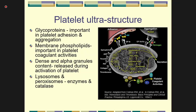In the coagulation cascade, a few steps require attachment to the membrane phospholipid of the platelet. Dense and alpha granules contain mediators released during platelet activation. On top of that, there are also lysosomes and peroxisomes which release enzymes and catalysts during inflammation.